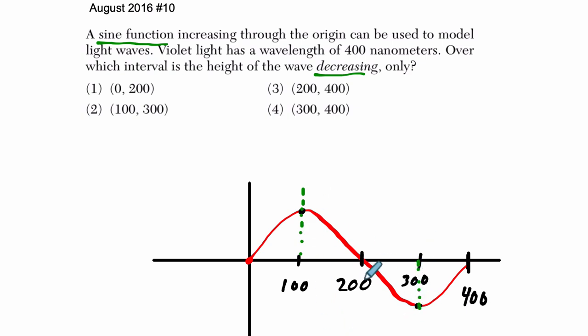Alright, so in that interval, it's decreasing. What do I have that's closest to it? Well, zero through 200 is not going to work, because that increases and then decreases. 100 to 300, there it is. It's our decreasing interval.